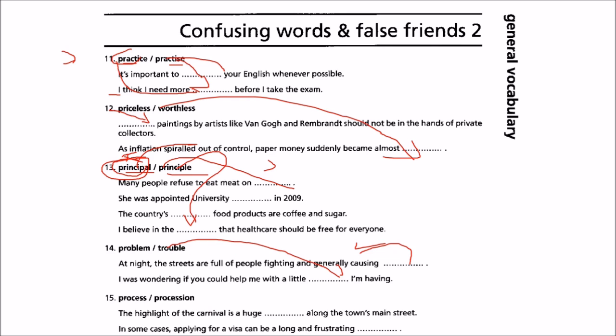Process and procession: the highlight of the carnival is a huge procession. Procession means a kind of festival where people progress along the town's main street. Applying for a visa can be a long and frustrating process — 'process' means steps or procedure.